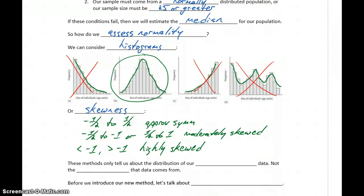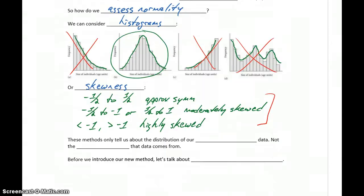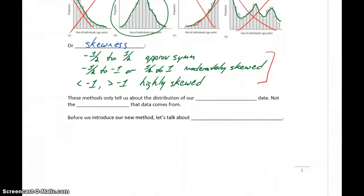So this gives us another way to determine if our data is symmetric or not. But the problem with this, just like histograms, is that this only tells us about our sample data. It only tells us about that information we know, and doesn't allow us to draw any inferences about the information that we don't have. So these methods only talk about our sample data, not the population that it comes from.